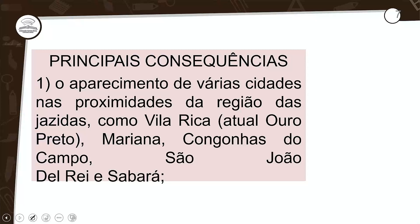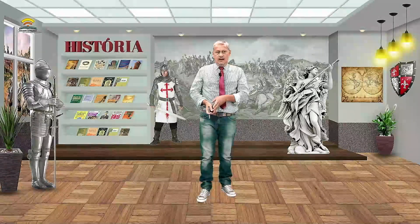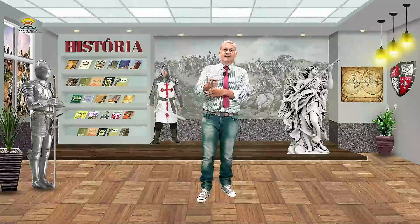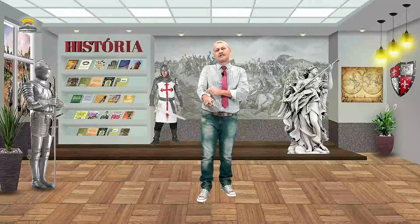Principais consequências. Primeira: o aparecimento de várias cidades nas proximidades da região das jazidas. Como exemplo, posso citar Vila Rica, hoje atual Ouro Preto, também Mariana, Congonhas do Campo, São João del Rei e Sabará. Eu conheço essas cidades, passei em cada uma delas para conhecer os trajetos e como surgiram.